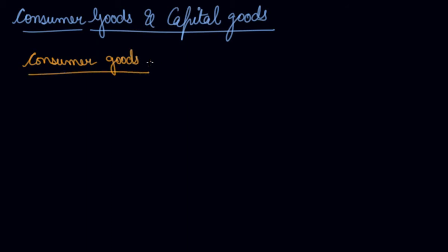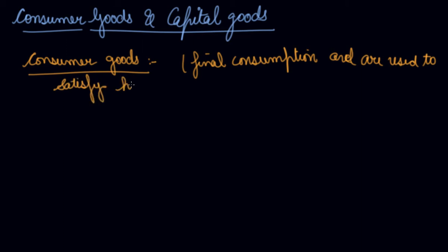Consumer goods are the goods which are used directly for the satisfaction of human wants. These are directly consumed by the consumer. These are meant for the final consumption and are used to satisfy human wants.